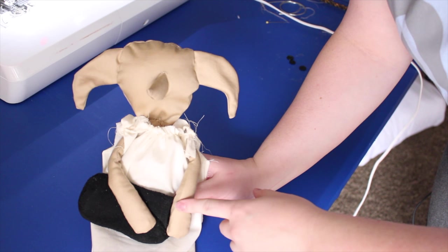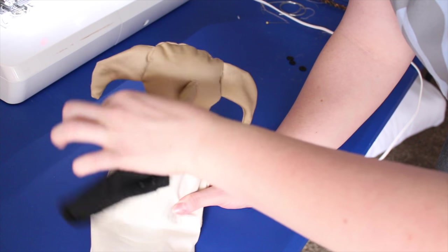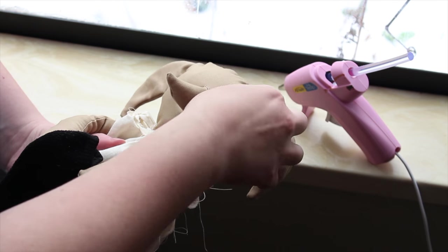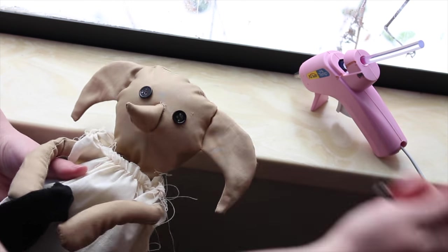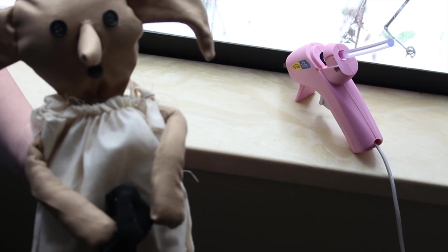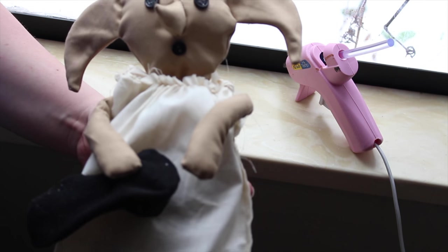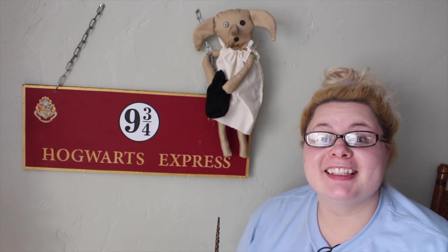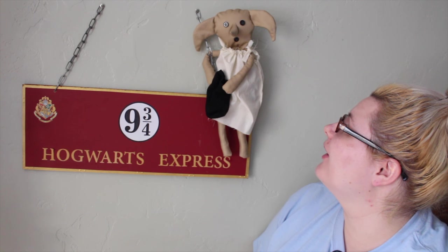I pinned a baby sock to his hand. Now I'm gluing on the eyes and the mouth. There we go. There's our Dobby house elf on the shelf.